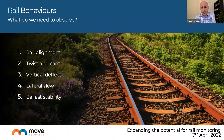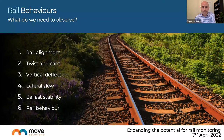We also consider ballast stability — whether from ongoing evolution under the rails or construction and remedial works adjacent to the rail — and the rail's behavior over length, including its relationship to structures like bridges, viaducts, and tunnels, and whether that has a direct impact on the rail's stability and safety.